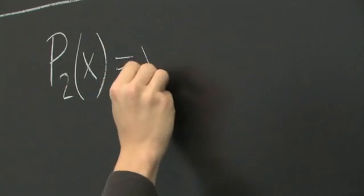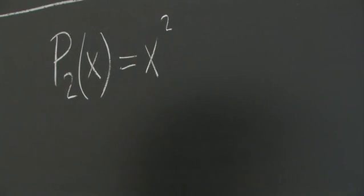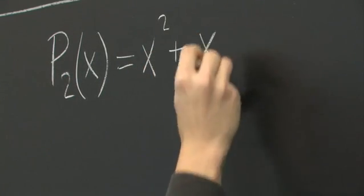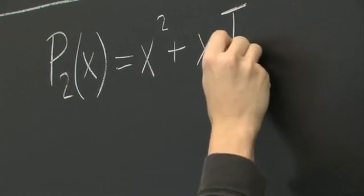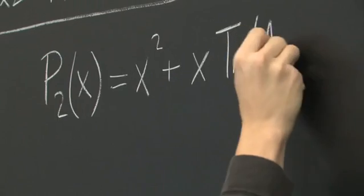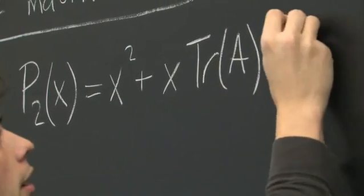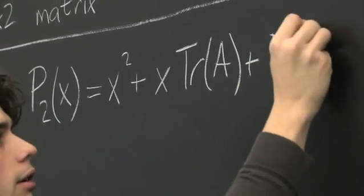It's simply x squared, assuming x is your independent variable as it often is, plus x times the trace of A, plus the determinant of A.